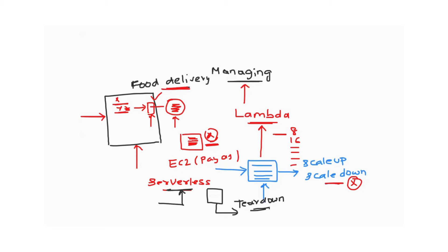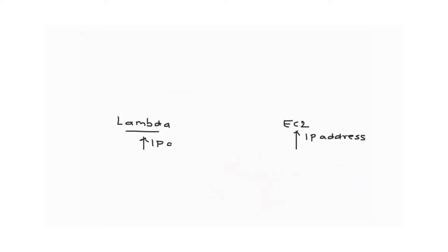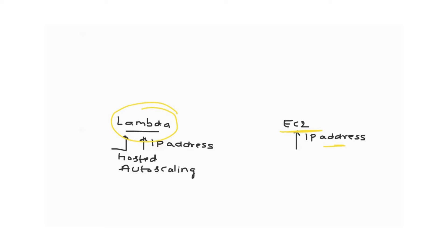If you compare Lambda with EC2, when you create an EC2 instance you get an IP address — public or private — and you can control the subnet range, auto-scaling, and many other things. Whereas with Lambda functions, you don't get anything related to an IP address — you won't even know where the instance is created or hosted, and you cannot see those details. Whereas with EC2, you are the complete owner of all those details.